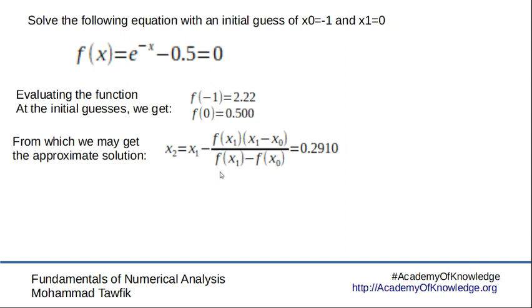Which is an approximation to what Newton Raphson method needed, which is the slope of the function. Here we use an approximate evaluation of the slope.